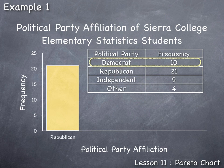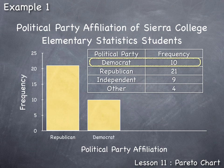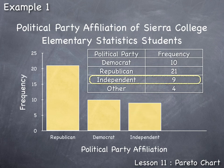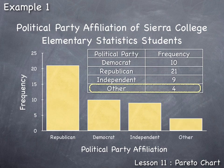The next bar is for the next highest frequency — Democrats, with a frequency of 10. We label it Democrat, draw it to a height of 10, and leave a space between bars to communicate that each political party is a separate category. Next, independents had a frequency of 9, so that bar is drawn to height 9. Finally, the category "Other" had a frequency of 4, so its bar is drawn to a height of 4.